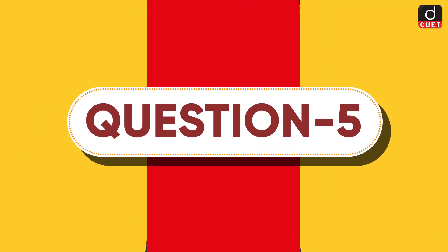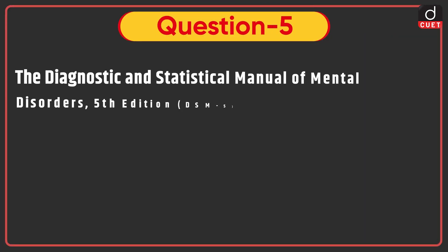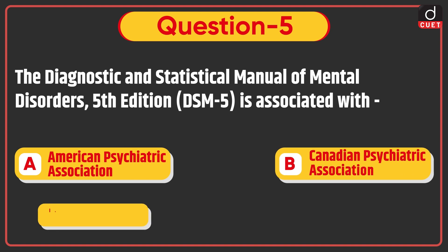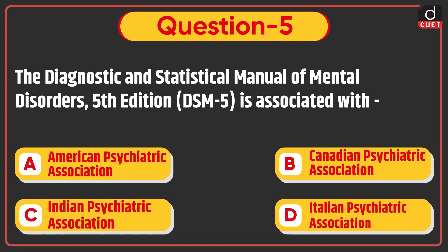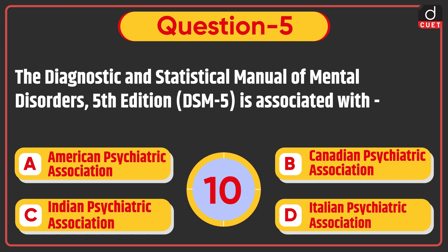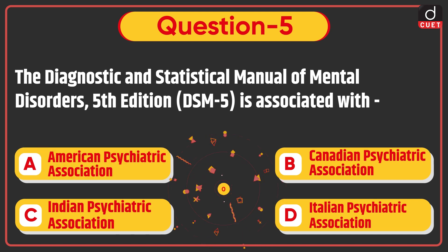Next question: the Diagnostic and Statistical Manual of Mental Disorders, 5th edition — DSM-5 — is associated with the American Psychiatric Association, Canadian Psychiatric Association, Indian Psychiatric Association, or Italian Psychiatric Association? The correct answer is option A: American Psychiatric Association.